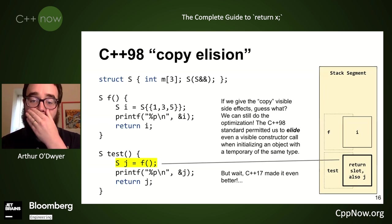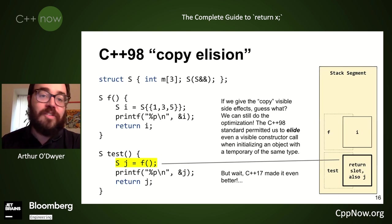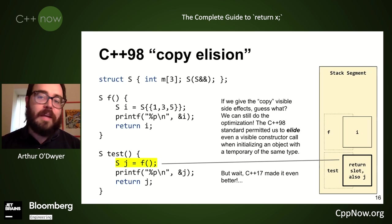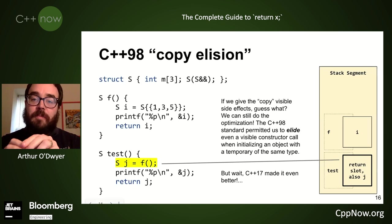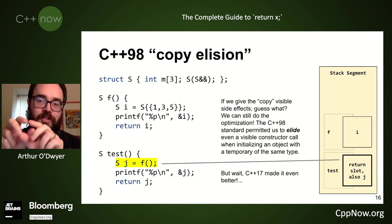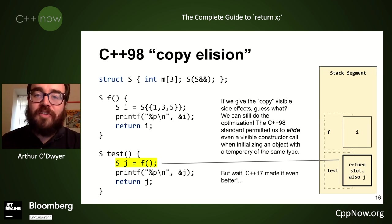Even if we give the copy visible side effects, we can still do this optimization. C++98 has a special case permitting us to elide even a user-defined constructor call when initializing an object with a temporary of the same type. So f() here is a prvalue, and when we copy that temporary into j, C++98 says you can elide the call to the copy constructor — put the return slot and j at the same location so that copy does not happen. And then C++17 made this even better.